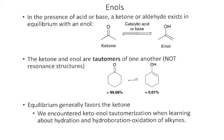If we have a ketone in the presence of an acid or a base, the ketone will exist in equilibrium with its enol. The enol gets its name because we have an alkene (ene) directly adjacent to an alcohol (ol). We first encountered ketones and aldehydes and their enol counterparts when studying alkyne reactions — hydration or hydroboration oxidation adds an H and an OH, making enols, which quickly isomerize into the ketone or aldehyde.